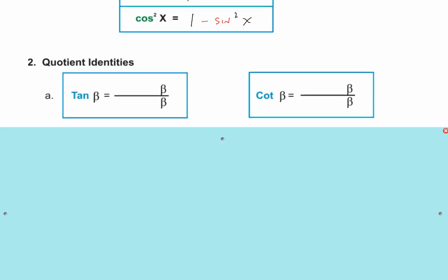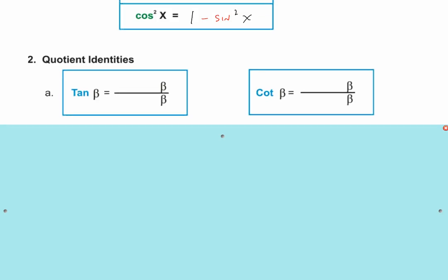The second most common identity is the tangent. The angle doesn't matter — I'm using beta just to get you used to different forms. The tangent is simply the sine of beta divided by the cosine of beta.